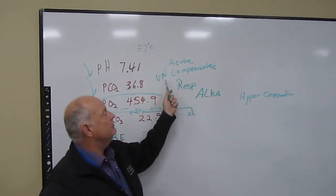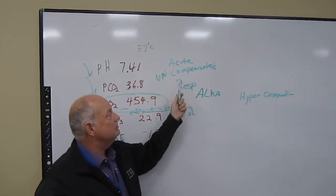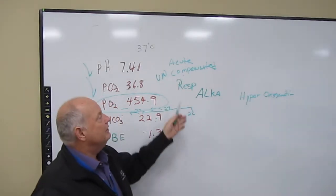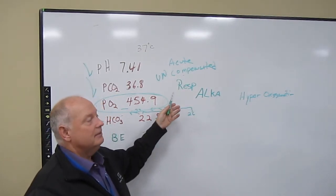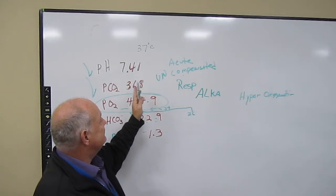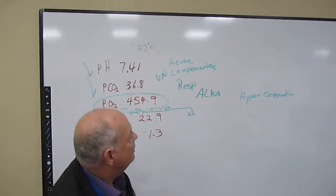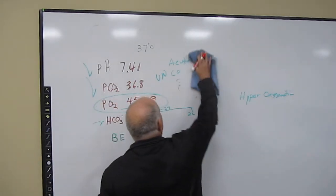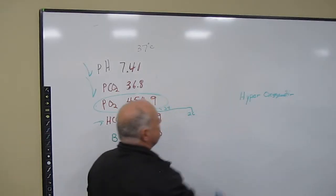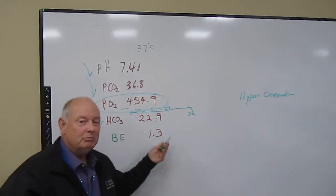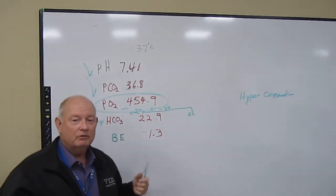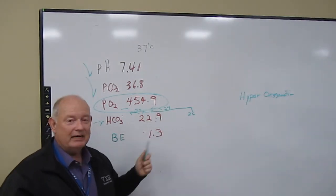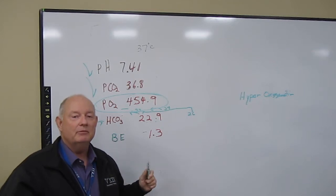But what about all this acute uncompensated respiratory alkalosis if it's normal? Well, we just classified that so we could tell if it was compensating, uncompensating. But since this is always in normal range, we can cross that out now and say, look, this is just a normal blood gas that is hyperoxygenated. Do you want to do anything with this? Of course, you want to fix this back to a normal number.